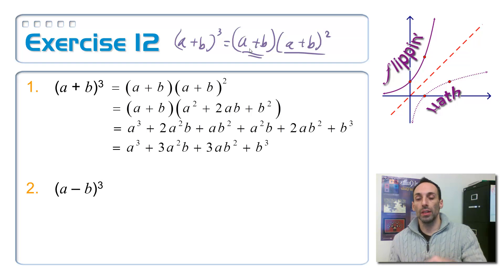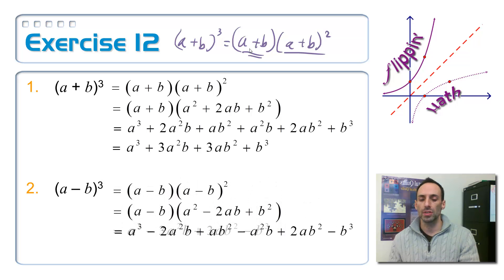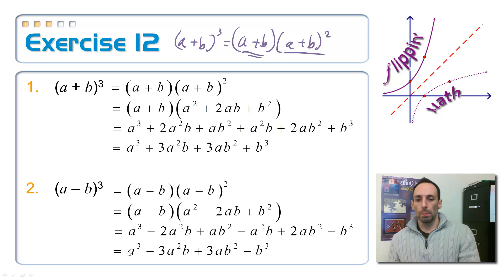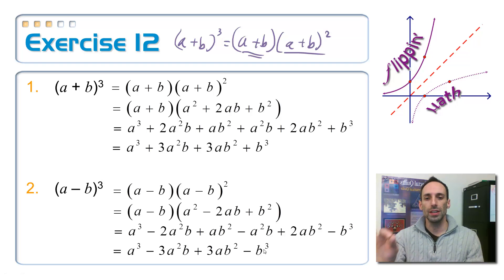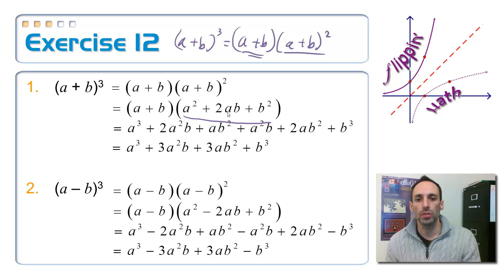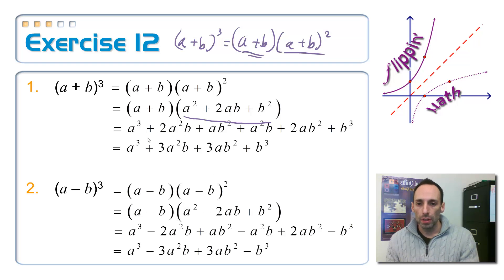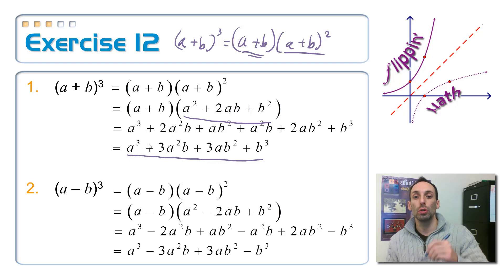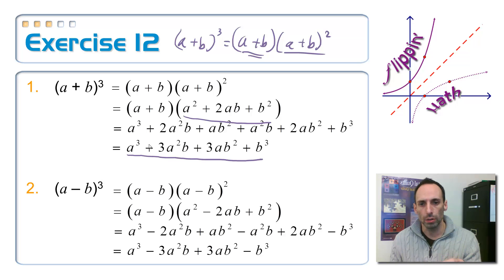For (a − b)³, it's exactly the same except for the signs — they alternate: plus, minus, plus, minus. Notice there is a very discernible pattern in both of these. The square of a binomial gives a squared plus 2ab plus b squared, and the cube gives a cubed plus 3a squared b plus 3ab squared plus b cubed. There's a pattern here, and if we recognize it, cubing becomes much easier.